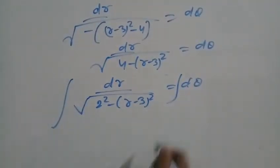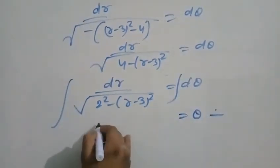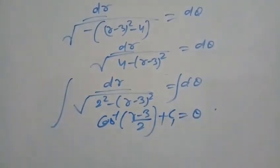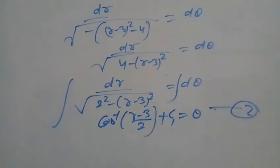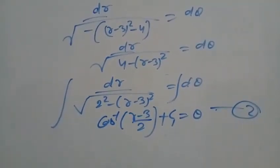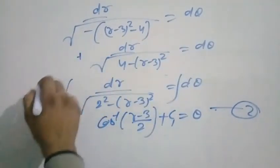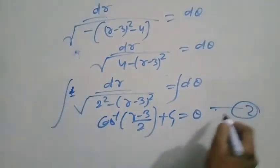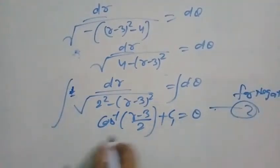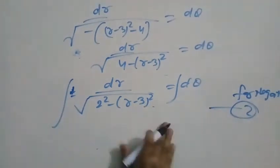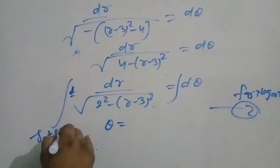Integrating both sides: sin⁻¹((r minus 3)/2) plus a constant B. Since the positive or negative sign can be chosen, we take the positive sign convention. The integrated result is θ equal to sin⁻¹((r minus 3)/2) plus B.